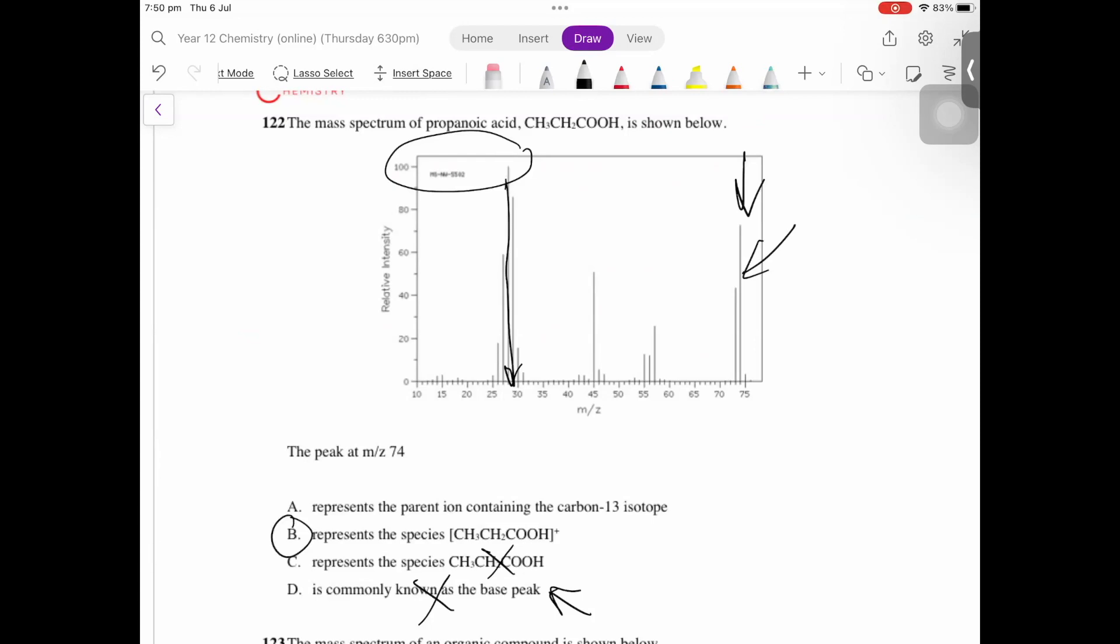Your answer for this one's going to be B. It's the same formula with square brackets and a positive charge on it. Because if you knock off an electron, an electron has a negative charge.